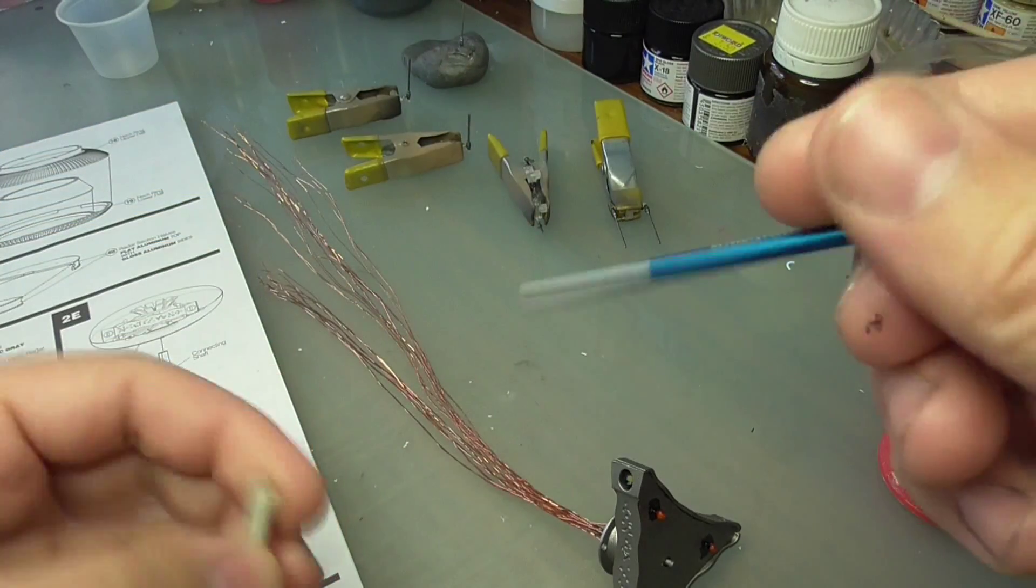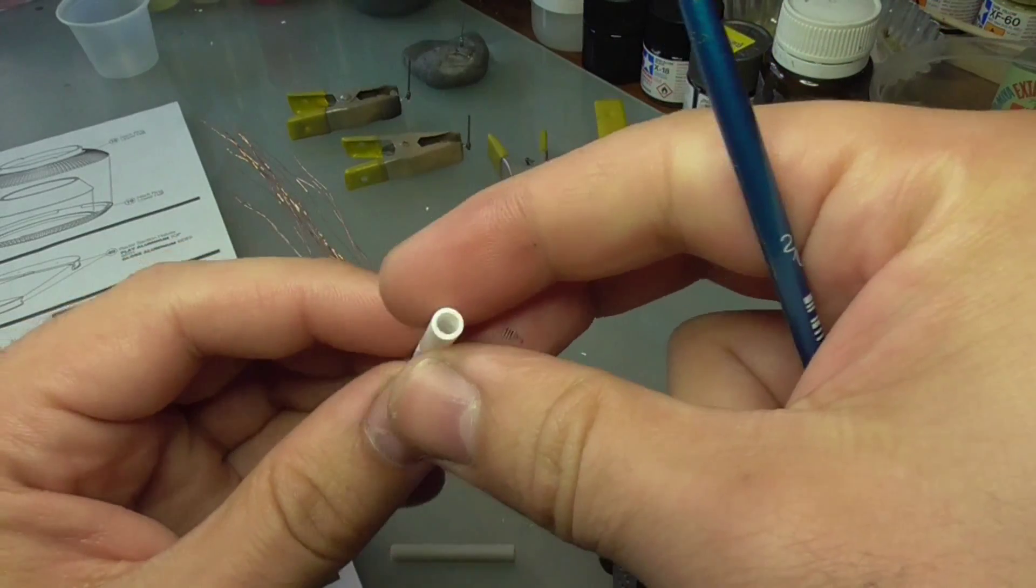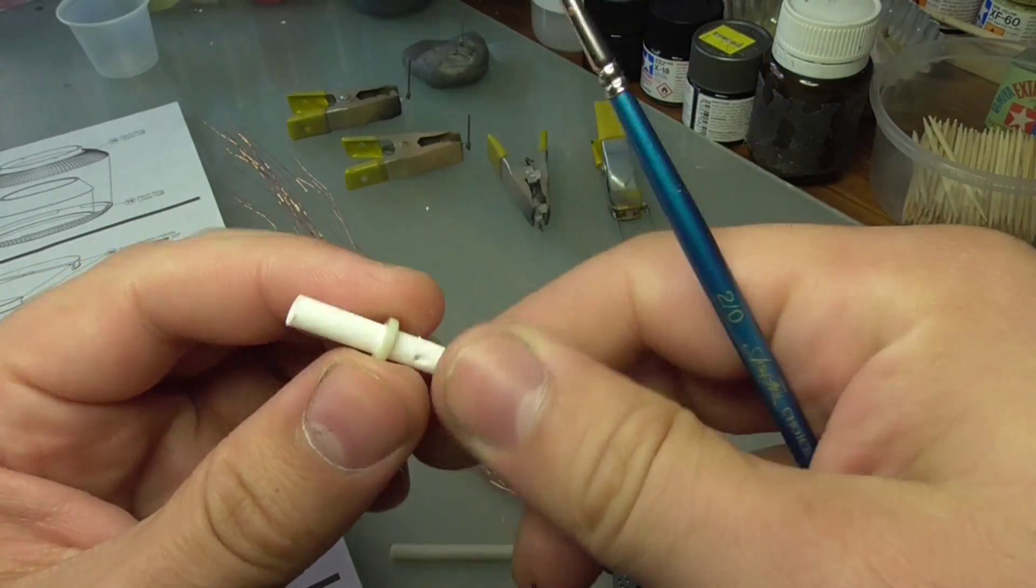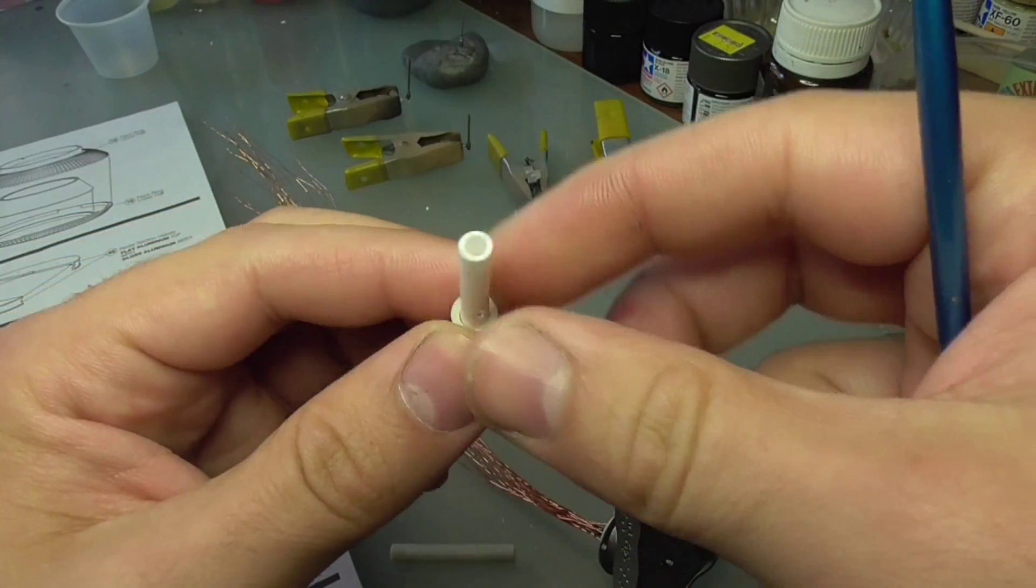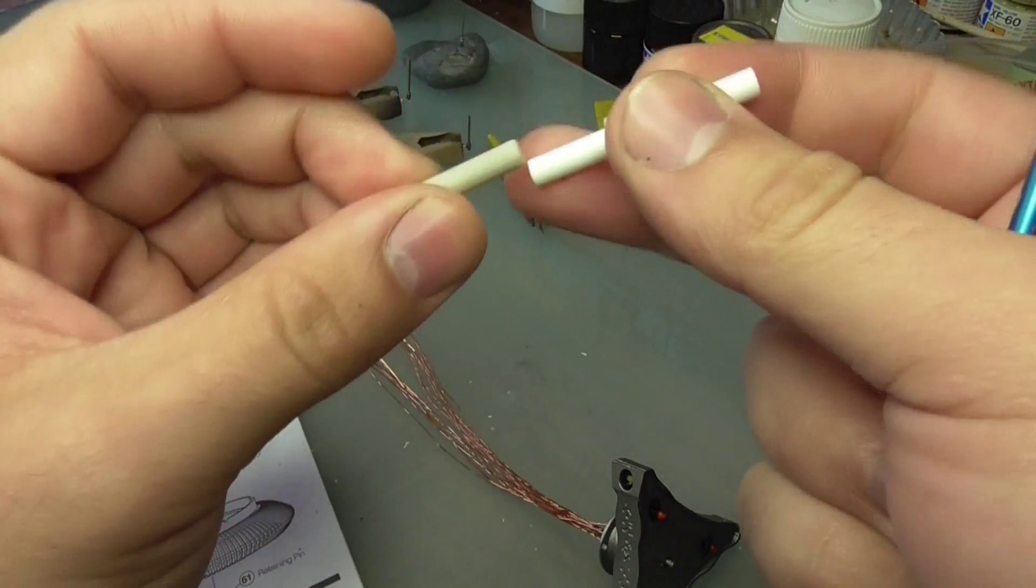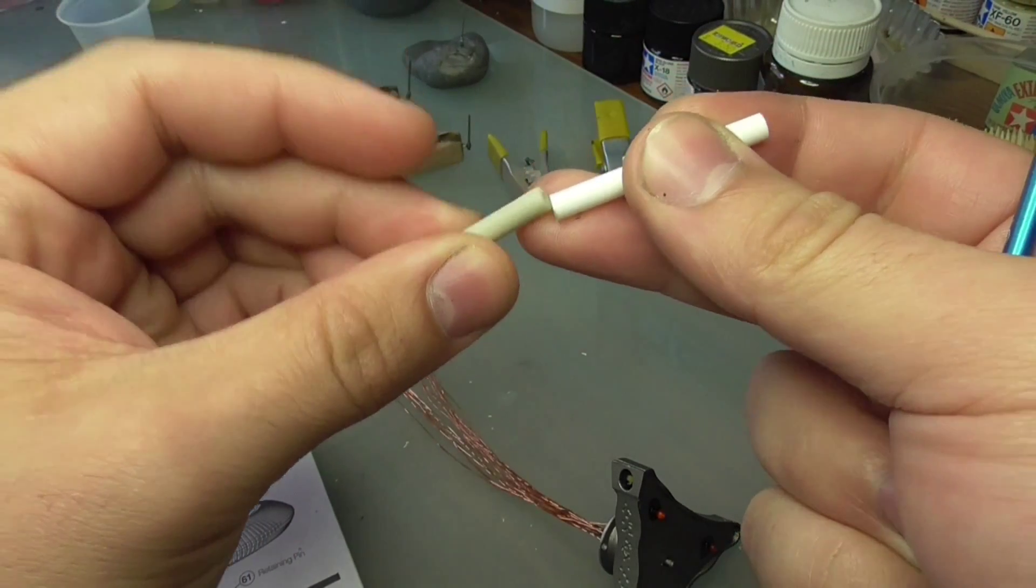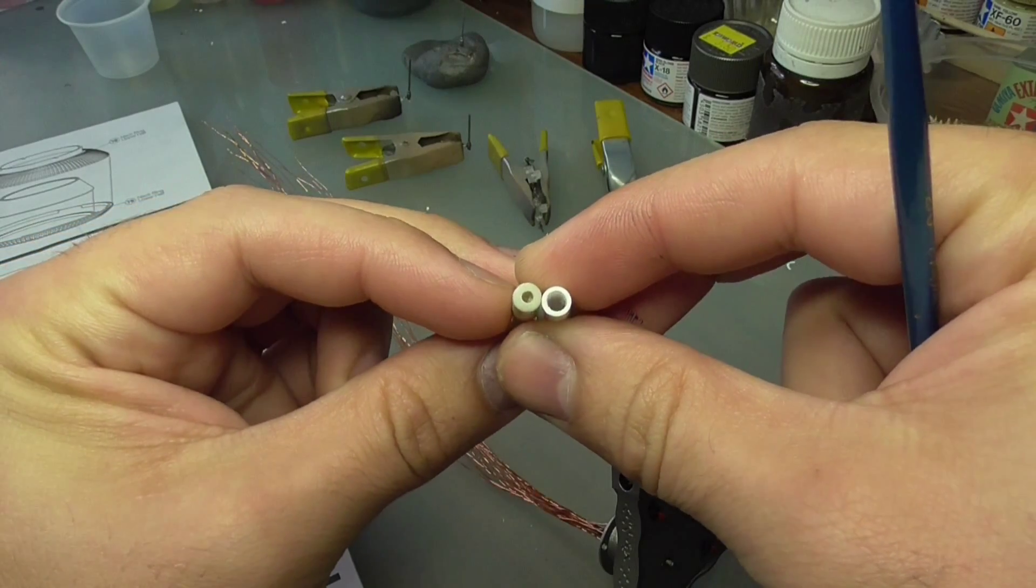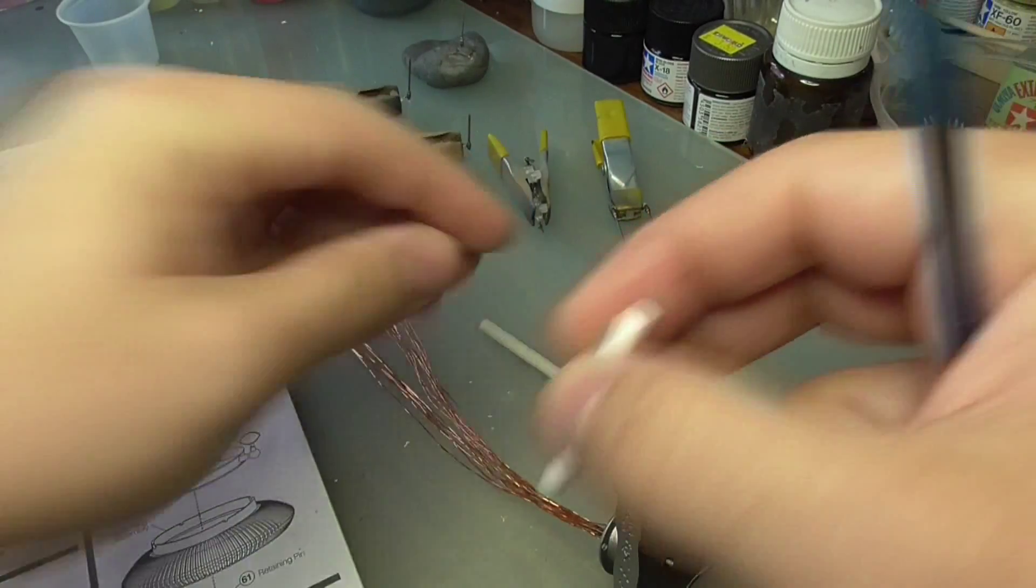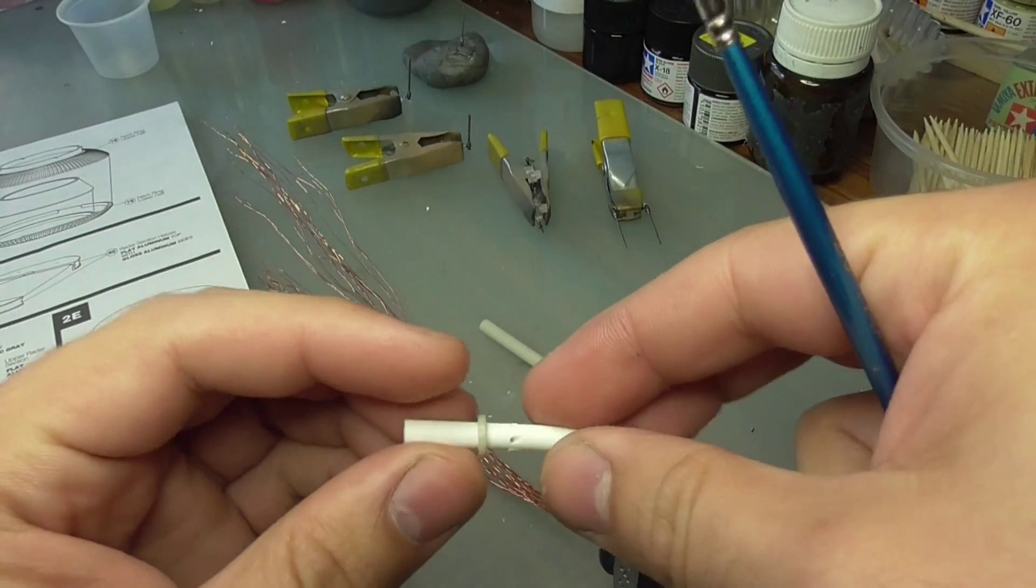So, I've found this bit of styrene tube in the parts box, which incidentally is almost exactly the same size. And it's got a lot bigger internal diameter, and the wires fit through perfectly.